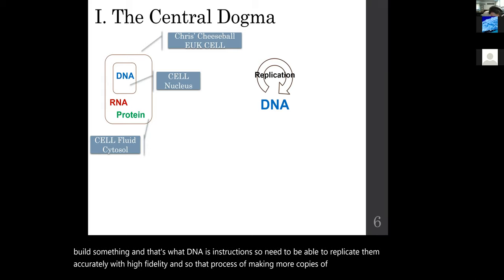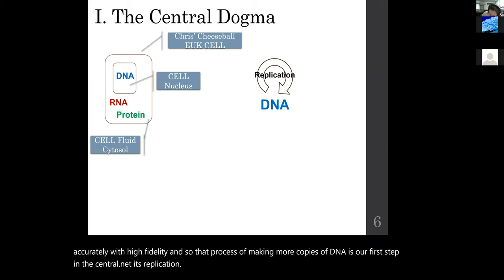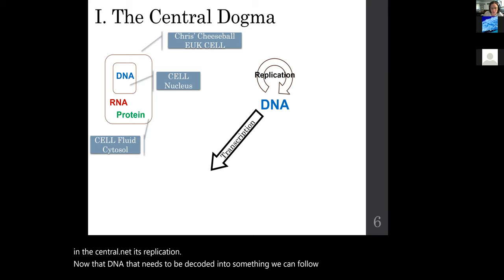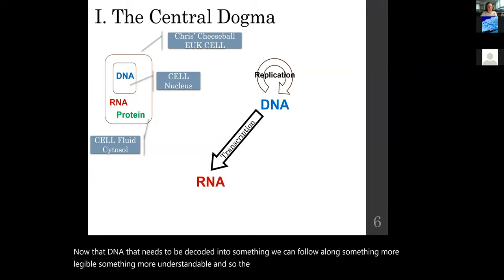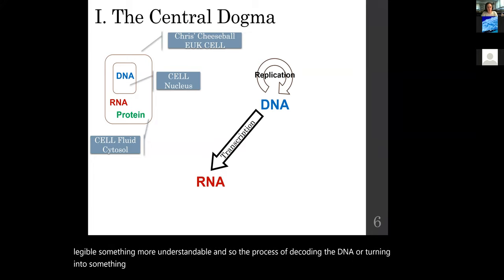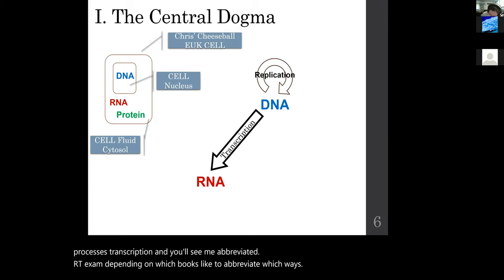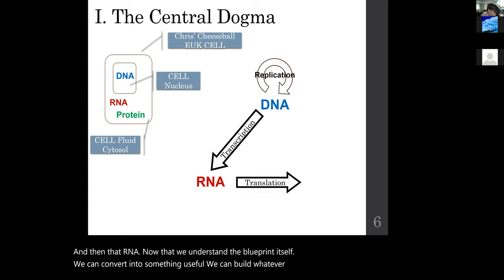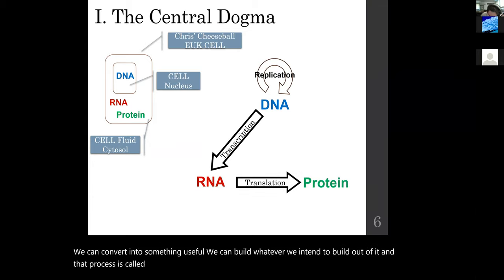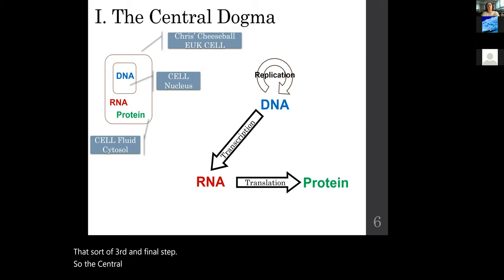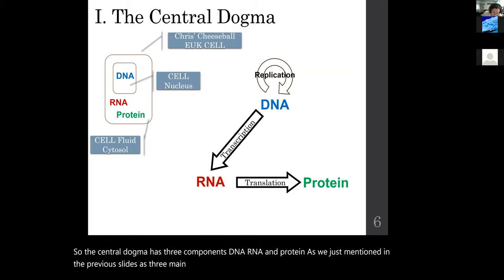The process of making more copies of DNA is our first step in the central dogma: replication. That DNA then needs to be decoded into something more legible and understandable — that process is called transcription, converting DNA to RNA. That RNA can then be converted into something useful — whatever we intend to build — and that process is called translation. The final product is a protein or polypeptide. So the central dogma has three components — DNA, RNA, and protein — and three processes: replication, transcription, and translation.